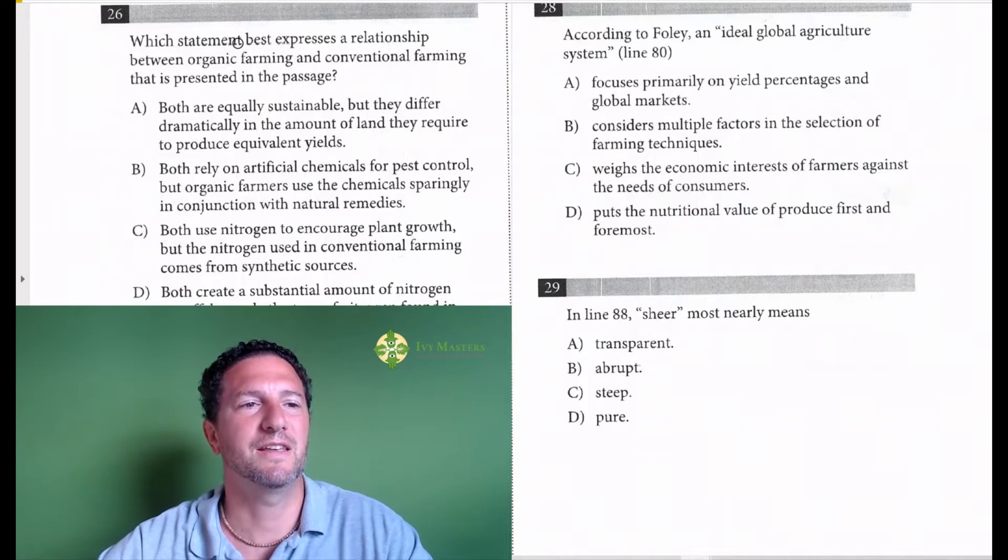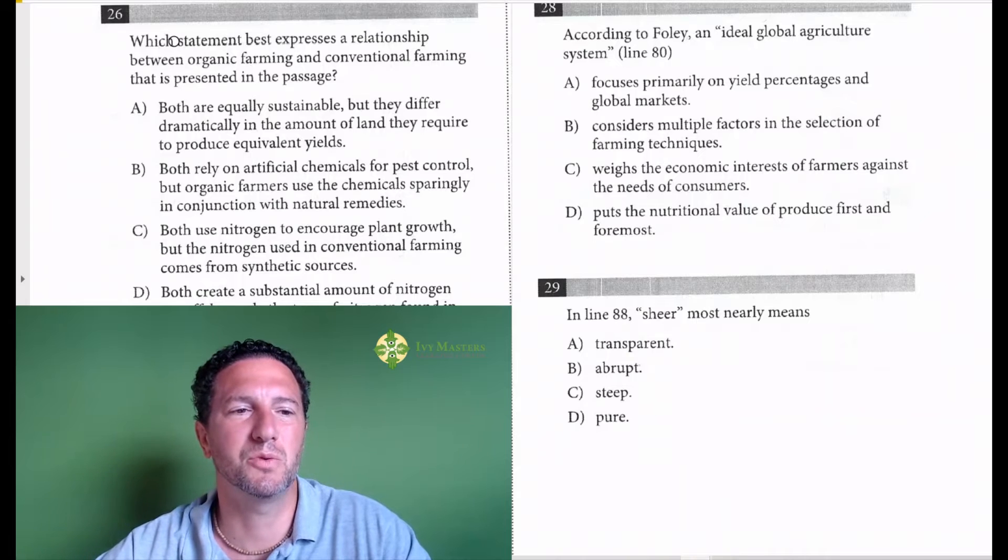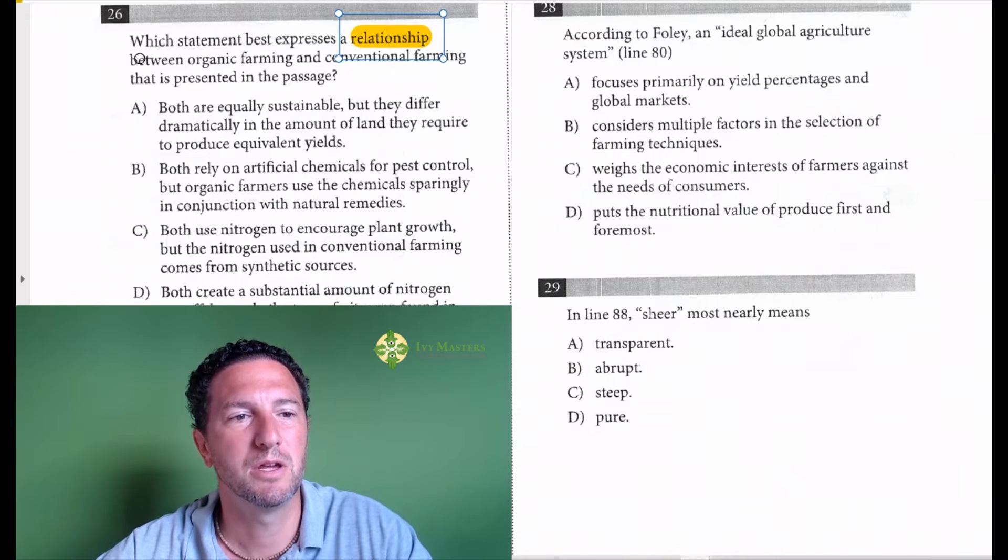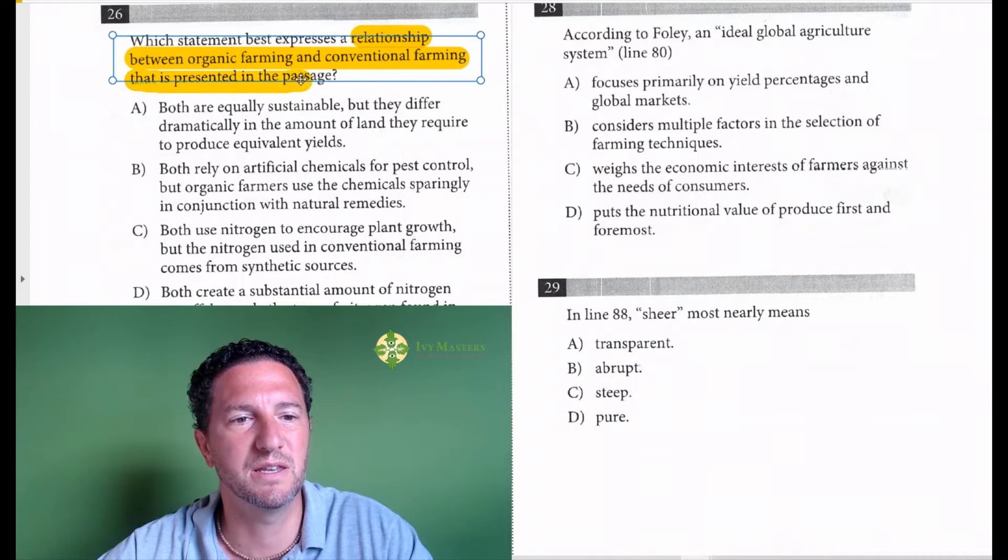Today we're looking at test 5, section 1, number 26 and 27. Question 26 reads: which statement best expresses a relationship between organic farming and conventional farming that is presented in the passage?